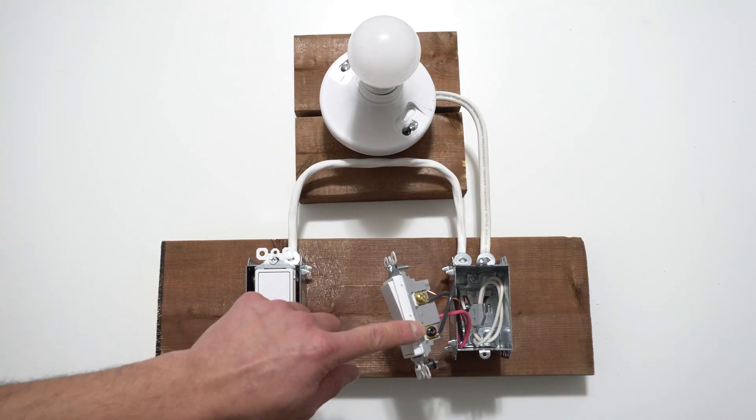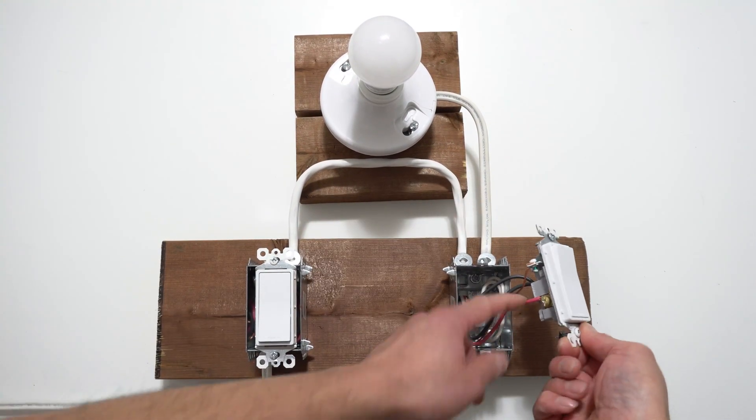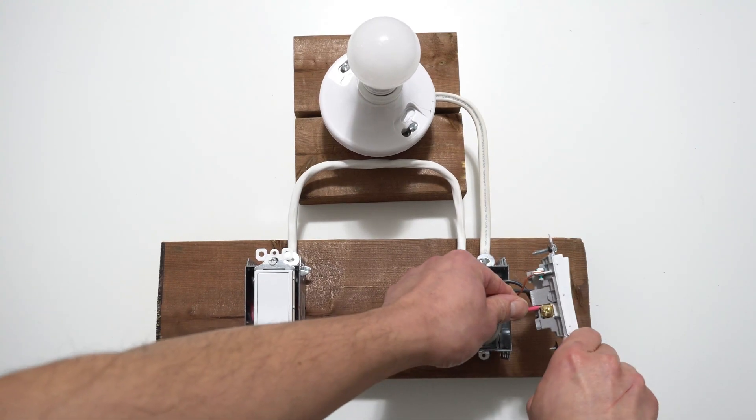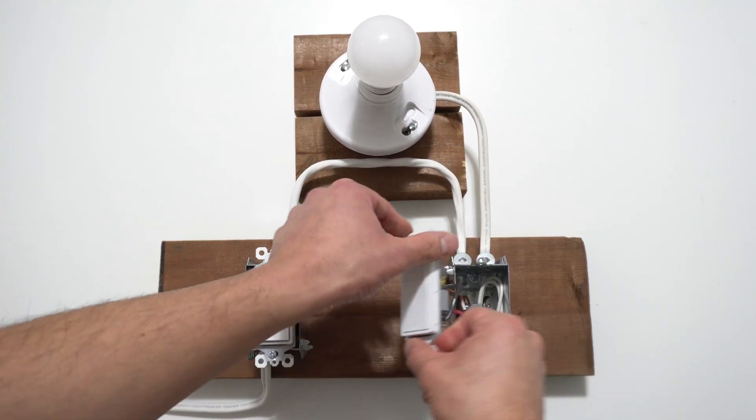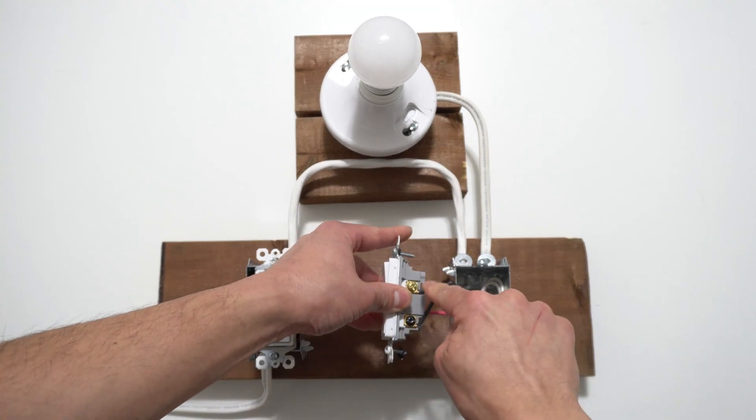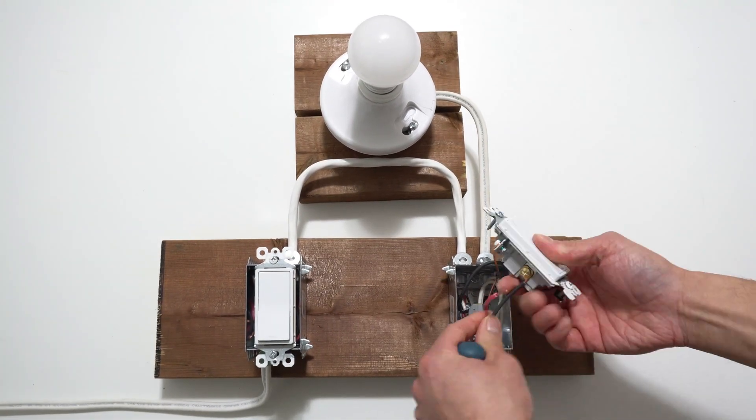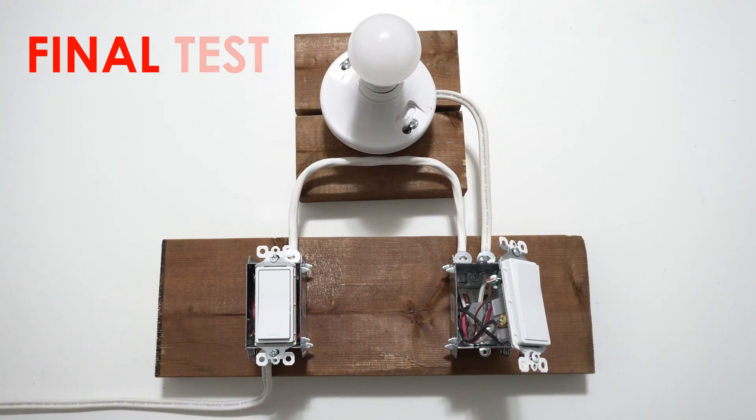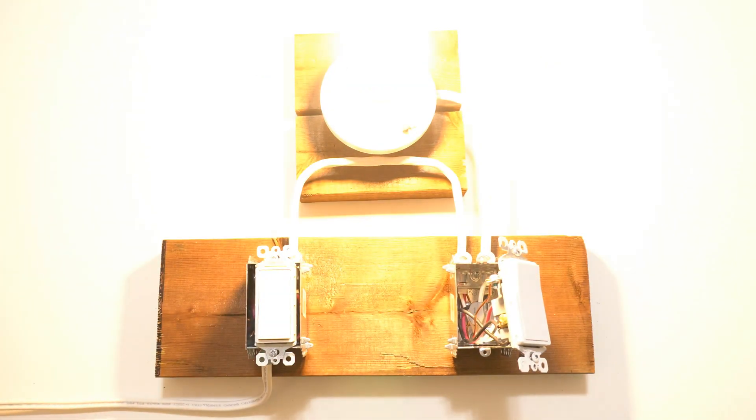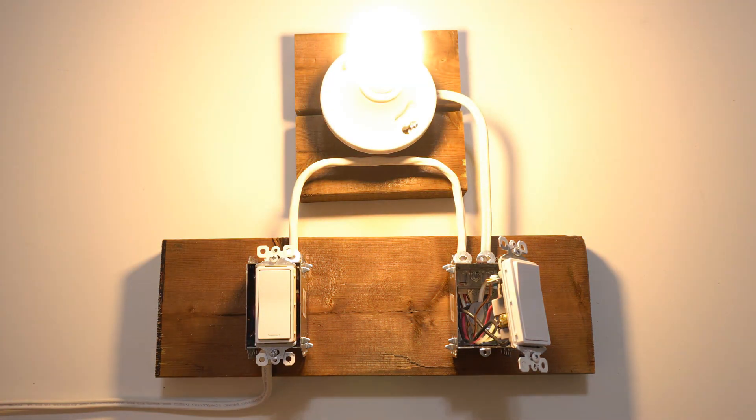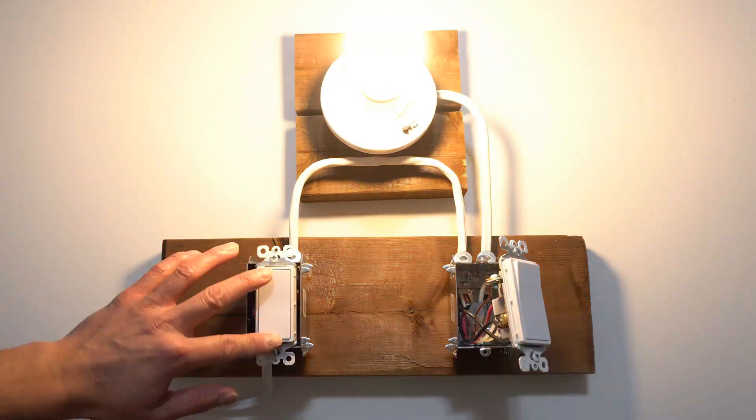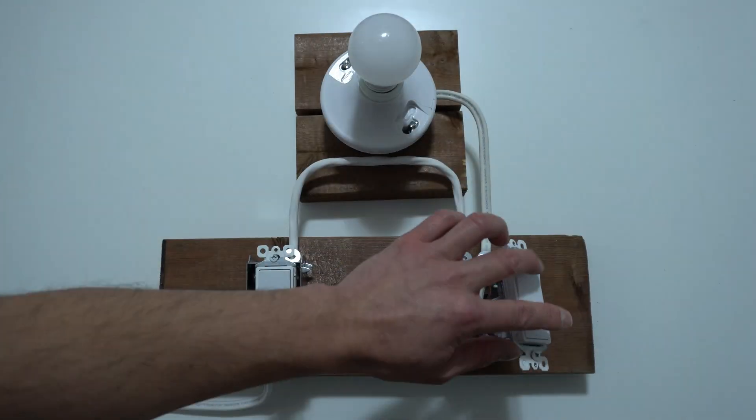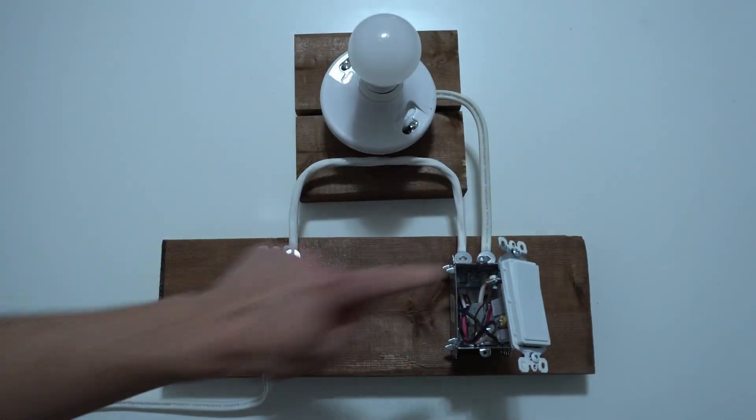Now I will interchange these wires. Instead, on this side will be a black traveler and on the other side will be the red traveler. Turning the power source once again. Power is now on. Now the moment of truth. And there you have it.